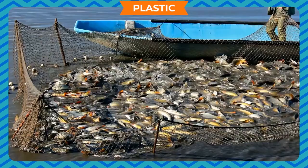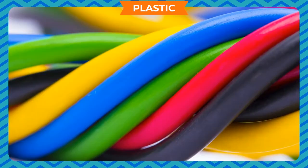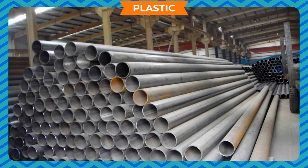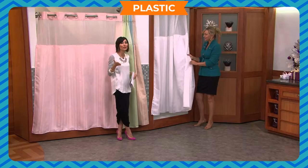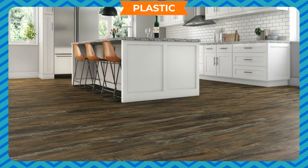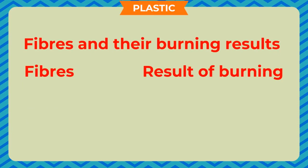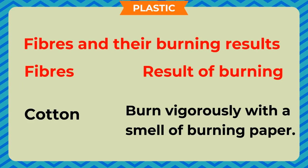Polyamide — used in fabrics, toothbrush bristles and fishing nets. Polyvinyl chloride (PVC) — used as covering for electric wires and in manufacturing plumbing pipes, shower curtains, window frames and flooring.